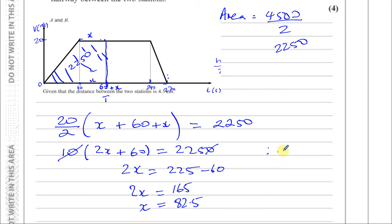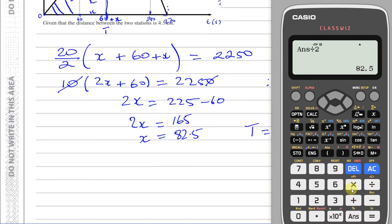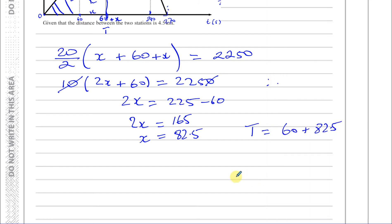The time we're looking for is 60 plus X, which is 60 plus 82.5, equaling 142.5 seconds. So it takes 142.5 seconds for the train to travel from station A to the halfway point between the two stations.